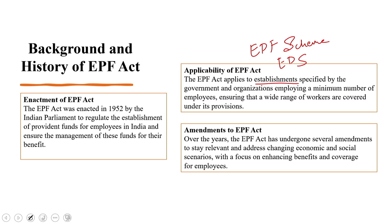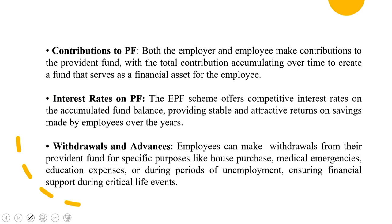The current applicability threshold for establishments typically stands at around 20 or more employees, with variations for specific sectors. The landmark 1995 amendment introduced the Employees Pension Scheme (EPS) as an integral part of the EPF Act, providing pension benefits upon retirement for qualifying employees. Amendments have also addressed the issue of retirement age to ensure the scheme's sustainability in the face of an aging population. These are some of the critical amendments when we consider the EPF Act in general.